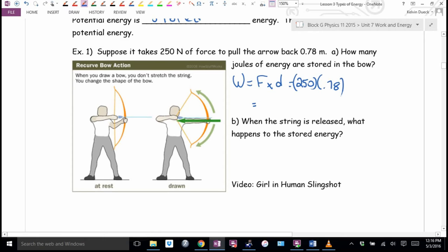250 times 78, which is what? What'd you get? 195 units. Joules. So one way that I can figure out how much energy is stored in an object is force times distance.